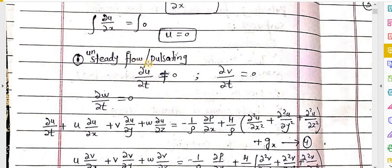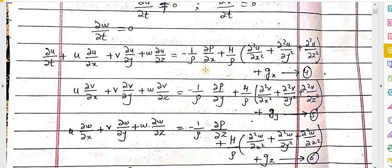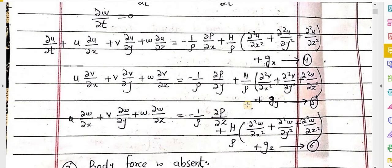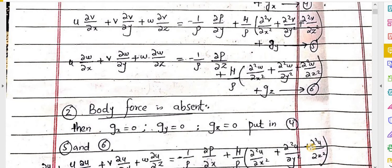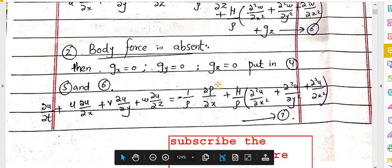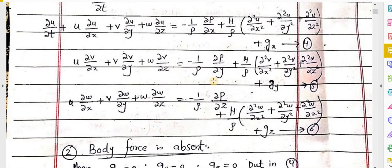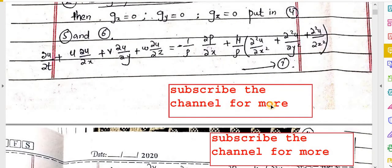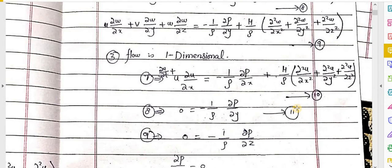For unsteady flow, the relevant condition holds, and our Navier-Stokes equations 1, 2, 3, and 4 will be rewritten as equations 4, 5, and 6. The second assumption was that body force is absent, so gravity force equals zero along x, y, and z axes. Substituting these values into equations 4, 5, and 6 gives new equations 7, 8, and 9.